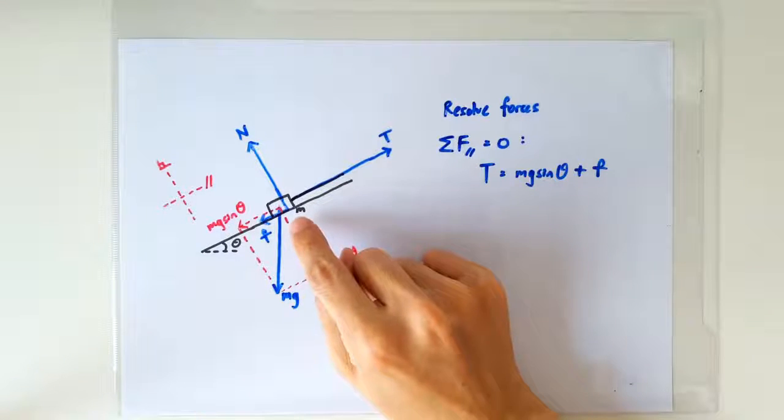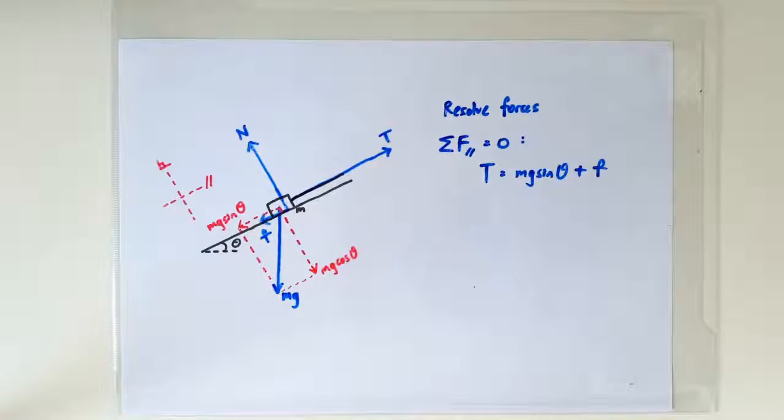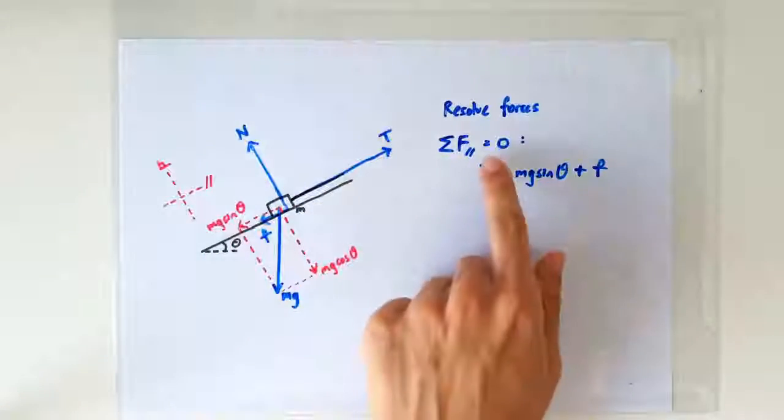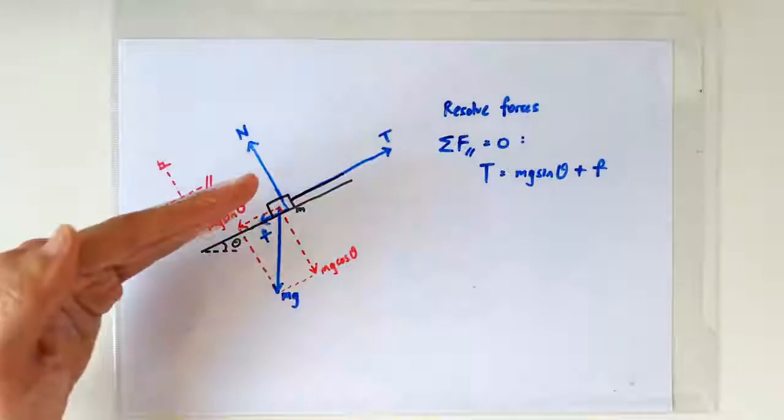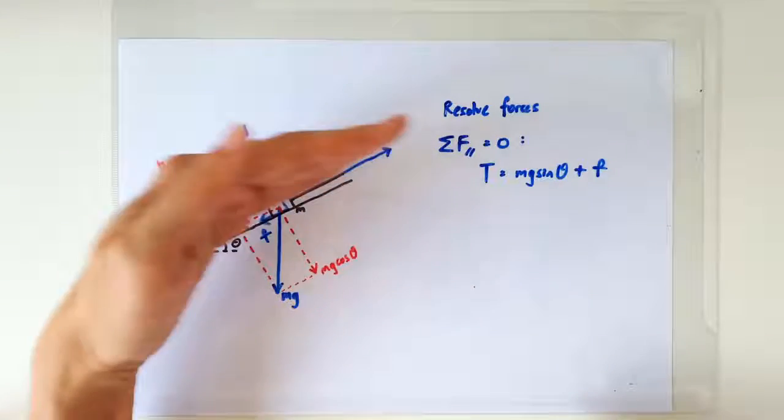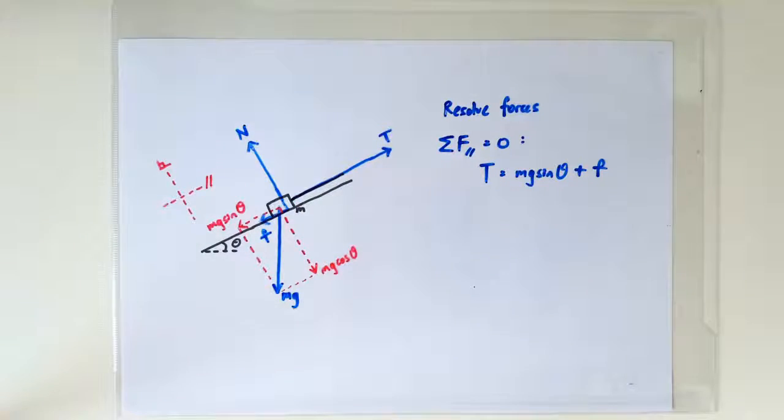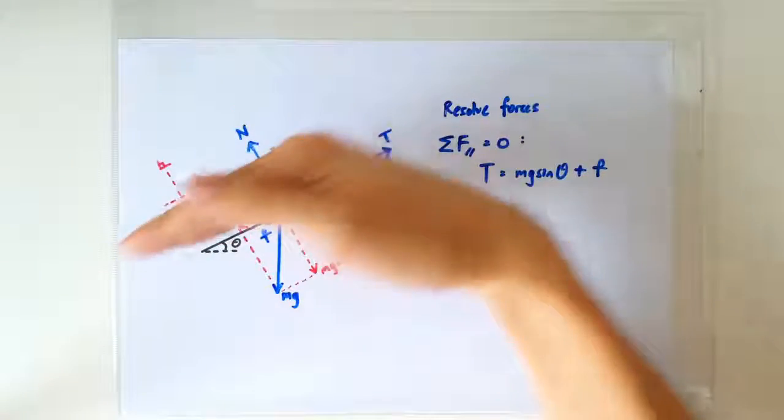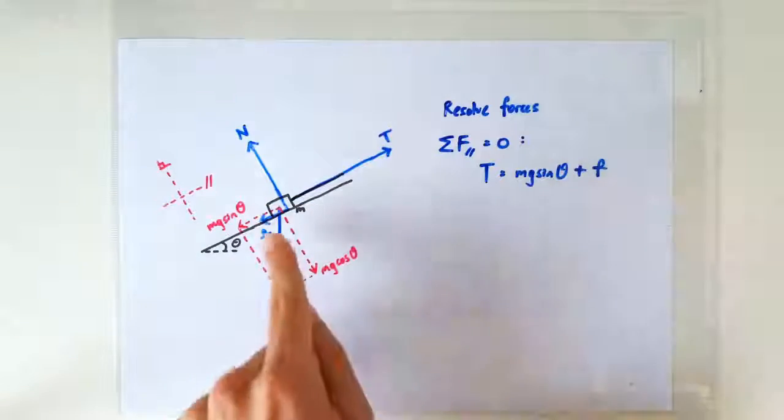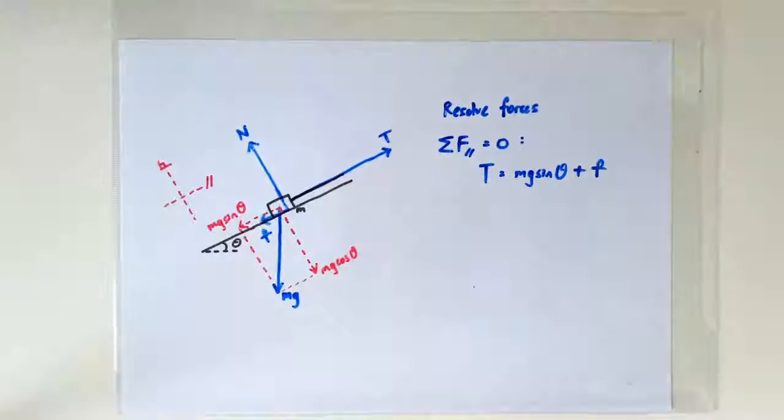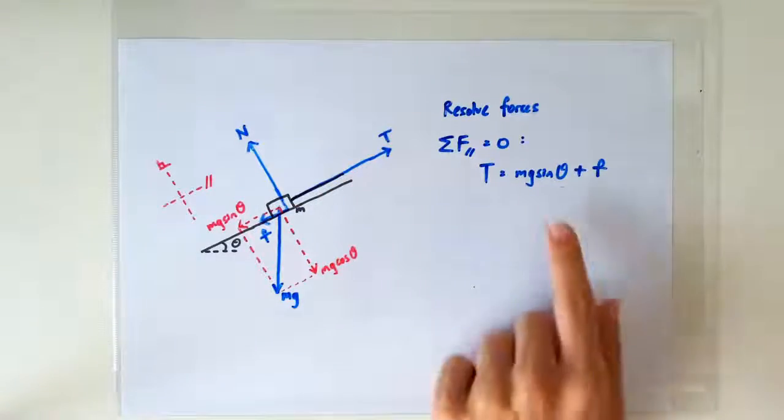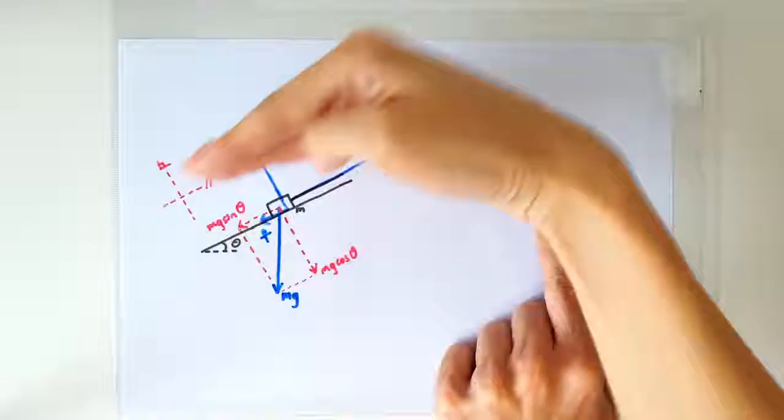Since the block is at rest, the net force in the direction parallel to the slope ought to be zero. So along this direction we have the tension up along the slope, which must balance the mg sinθ, which is the parallel components of the weight along the slope, and the frictional force. So the tension up along the slope is balancing the mg sinθ and the frictional force down along the slope.